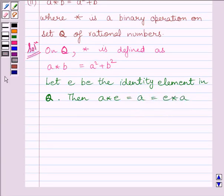Now, let us find out a star e. We know a star e equals a square plus e square, which must be further equal to a.